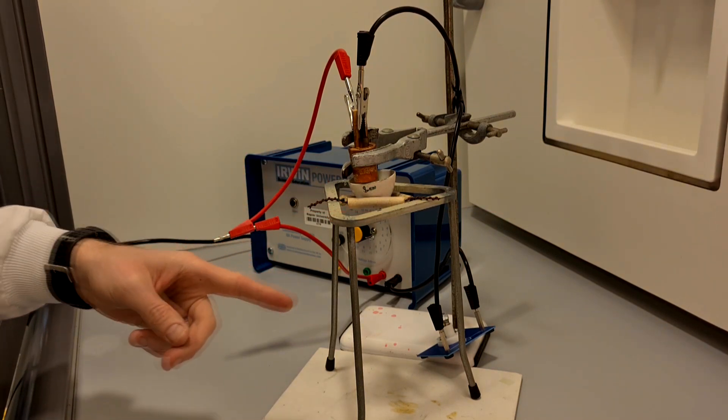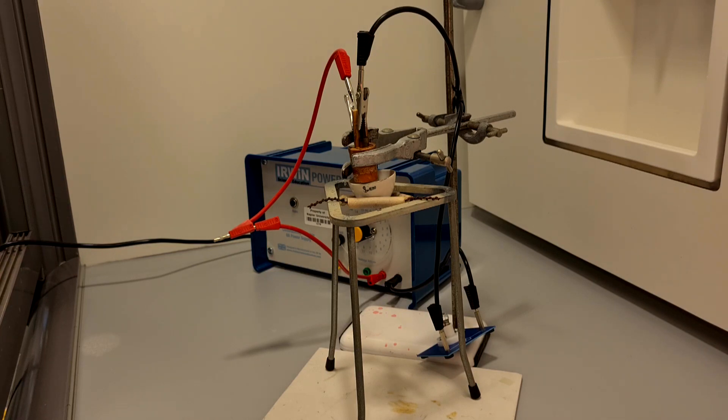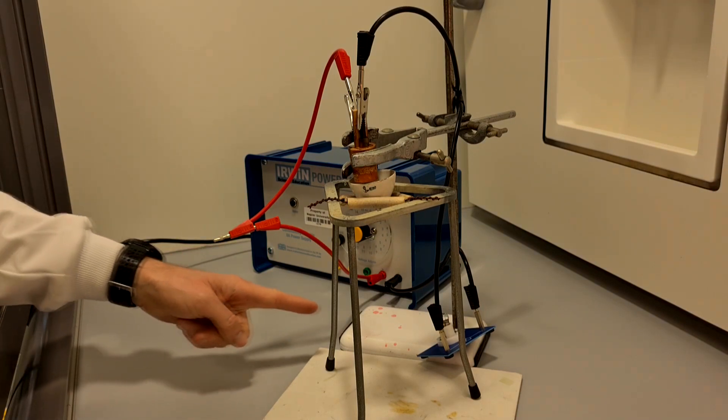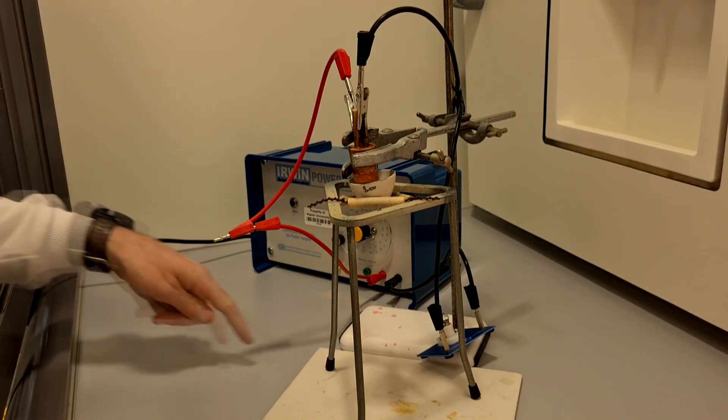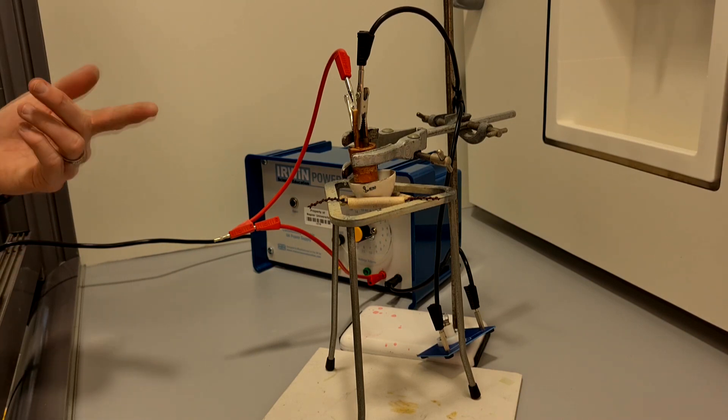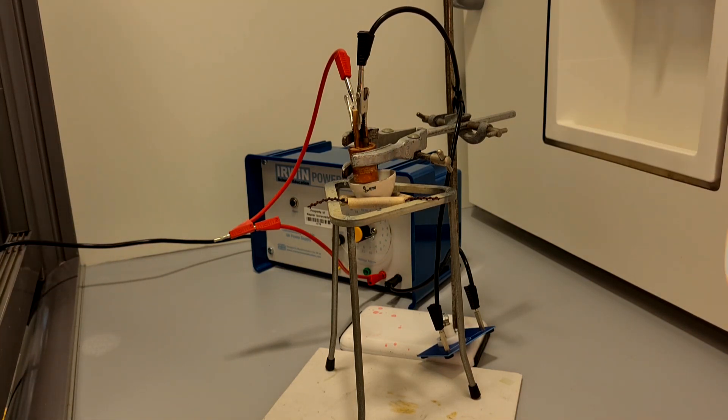I'm going to move the Bunsen burner under the crucible containing the zinc chloride powder and gently heat it so that it melts. And what we are looking for is to see if this light bulb lights up indicating that the circuit has been complete, so therefore the zinc chloride melt conducts electricity.